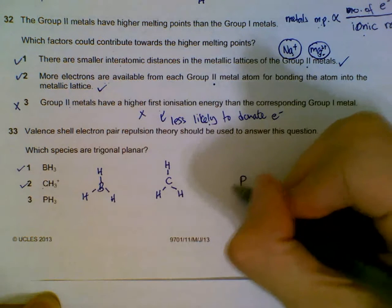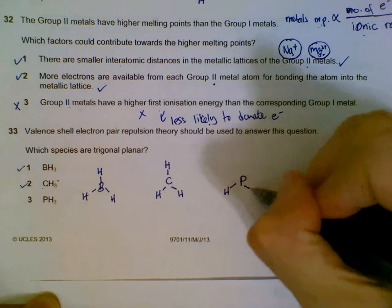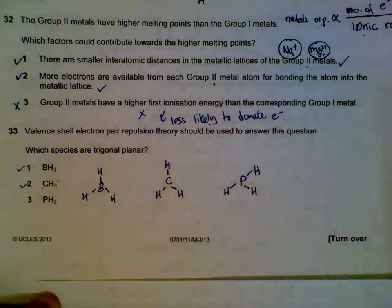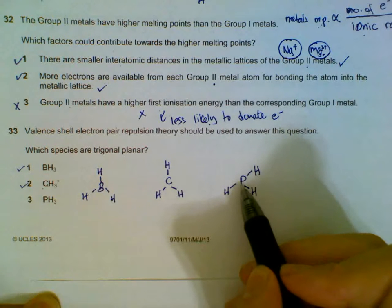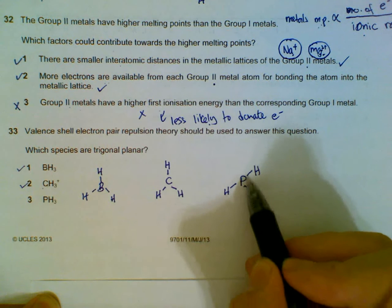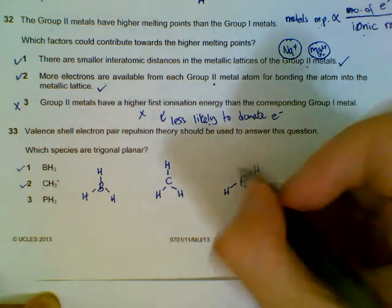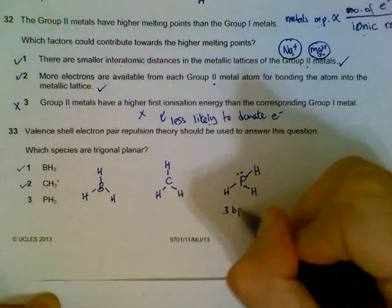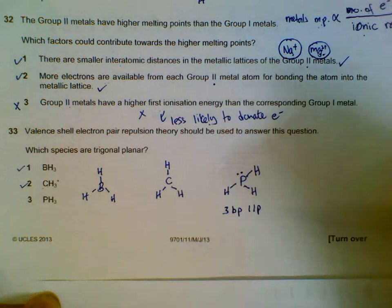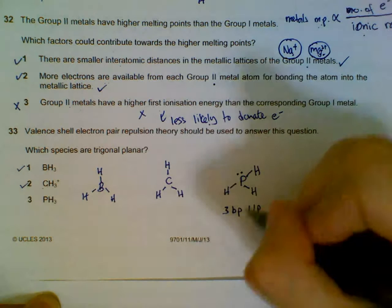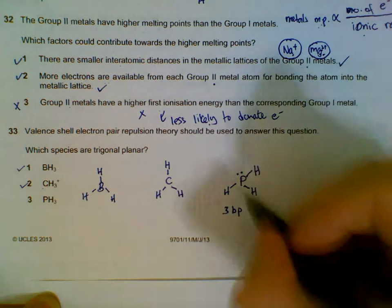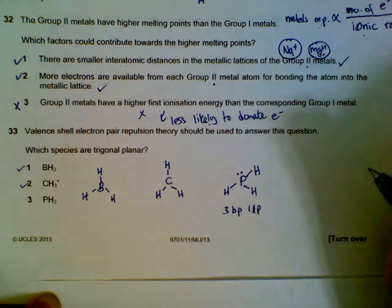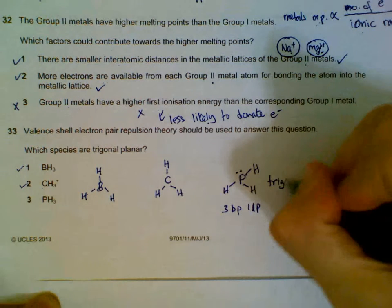PH3: phosphorus is in group five with five outer electrons. It uses three for bonding, so it has two more electrons not used for bonding. We have three bond pairs and one lone pair for PH3.